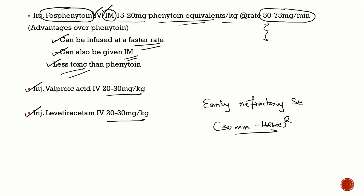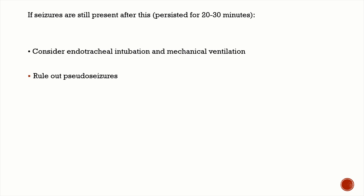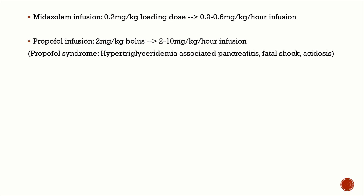In early refractory status epilepticus — seizures persisting after 30 minutes up to 48 hours — two things must be considered: first, consider endotracheal intubation and mechanical ventilation; second, rule out psychogenic seizures or pseudo-seizures. If seizures still persist after IV anti-epileptics, you proceed to IV infusions. Midazolam infusion is given with a loading dose of 0.2 mg/kg followed by an infusion at 0.2 to 0.6 mg/kg per hour.